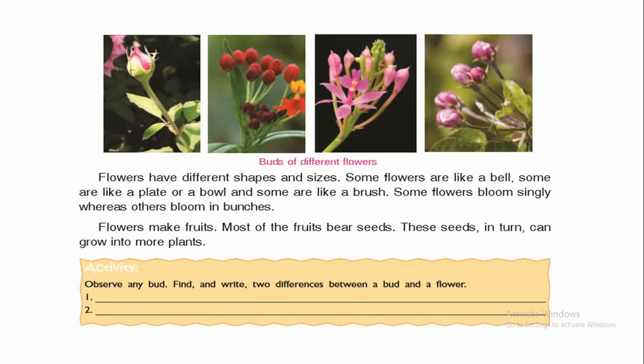The bud is the incomplete flower which further develops into a complete flower, and the green leaves protect the bud. Now, flowers have different shapes and sizes — some flowers are like a bell, some are like a plate or a ball, and some are like a brush. Some flowers bloom singly, whereas others bloom in bunches.